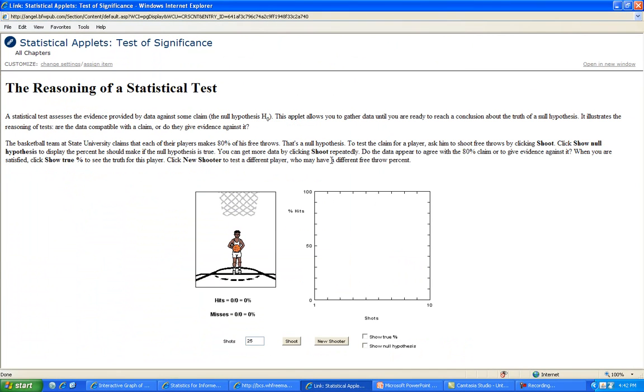Let's look at an example of this. This is another applet you have. This is the reasoning of a statistical test that assesses the evidence provided by data against some claim—the null hypothesis. The next video will explain this. The applet allows you to gather data until you're ready to reach a conclusion about the truth of a null hypothesis, meaning nothing's going to change. This basketball team at State University claims their players make 80% of free throws. To test the claim, you ask them to shoot free throws.